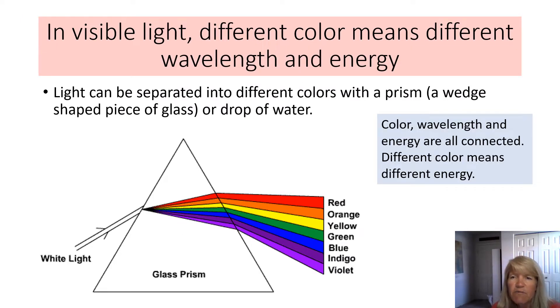Visible light, different color means different wavelengths and different energies. So the light we see from the sun, it doesn't look like it has a color, but it is actually made up of many colors and you can separate light into its different colors with a prism. So a prism is a wedge-shaped piece of glass or even like a drop of water and as the light passes through it, different wavelengths are deflected more or less and so it separates it into the colors. And you've all seen a rainbow and that's what causes it. It's the sunlight going through the drops of water and a prism works the same way.